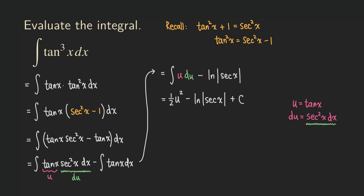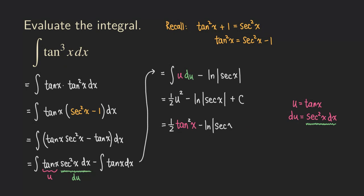We just need one more step — replace u with tangent x to switch the whole expression back into terms of x. So we get one-half tangent squared x, minus ln of absolute value of secant x, plus C. And then we are finished.